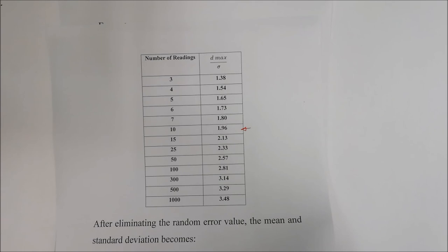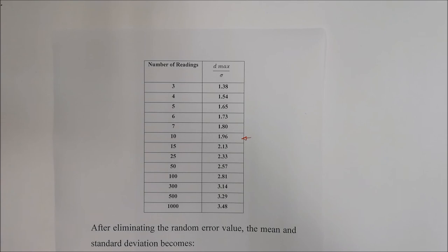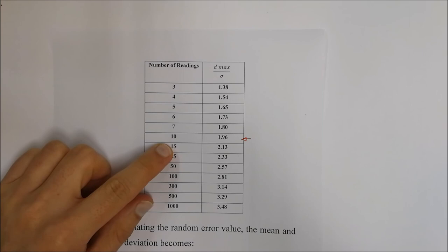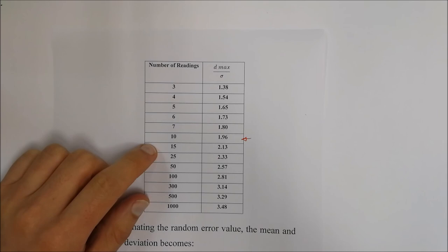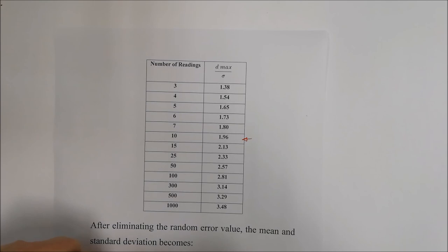You might ask: what if the number of readings falls between values listed in the table? For example, if you have 12 readings, simply use interpolation. Interpolation finds a ratio of where 12 sits between 10 and 15, and applies a linear relationship to find the corresponding d_max value between 1.96 and 2.13. This allows you to identify the correct maximum value for any number of readings not explicitly listed.